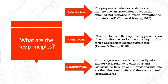Each of the three learning theories has its own key principles. The defining element of Behaviorism is the inclusion of the scientific method to study learning. Behaviorist research revolved solely around the effect of a stimulus on a learner's behavior. The purpose of Behaviorist studies is to identify how an association between a stimulus and response is made, strengthened, or maintained. Behaviorism focuses on new behavioral patterns being repeated until they become automatic.